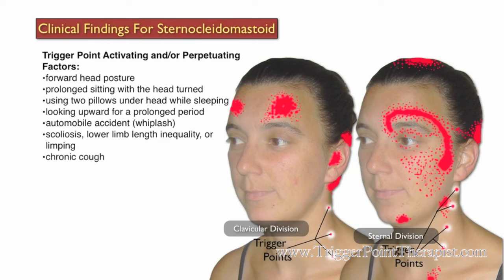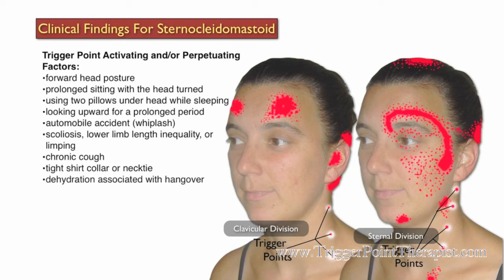Additional activating or perpetuating factors include chronic cough, tight shirt collar or a tight necktie, dehydration associated with hangovers, and sinusitis, dental abscess, or herpes simplex oral.